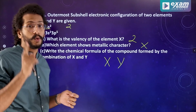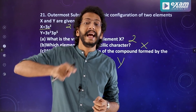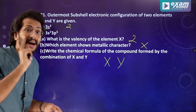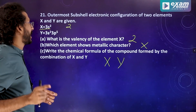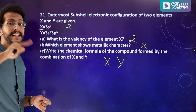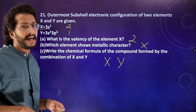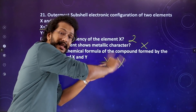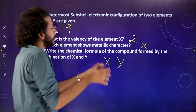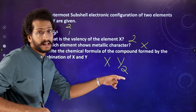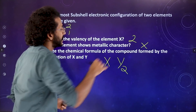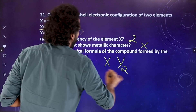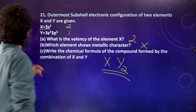The valency is determined by 8 minus the number of valence electrons. Y has 7 valence electrons, so valency equals 8 minus 7 equals 1. X has valency 2 and Y has valency 1, so the formula of the compound is XY2.